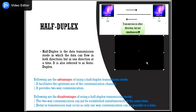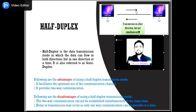In half-duplex mode, the channel direction can be reversed. The station can both transmit and receive data. The message flows in both directions, but not at the same time — meaning you are able to receive data or send data, but not both simultaneously. In half-duplex mode, it is possible to perform error detection, and if any error occurs, the receiver sends a request and the sender can retransmit the data.